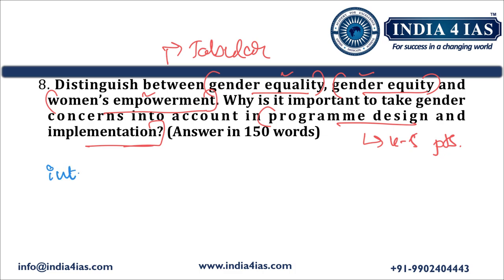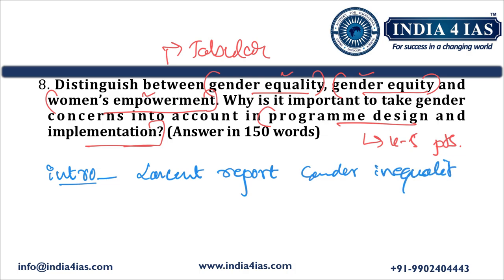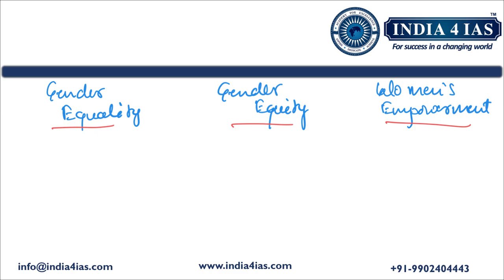Coming to the first part, we define and distinguish all three concepts. Gender equality is the state of equal rights, responsibilities, and opportunities for all genders in society. Gender equity is fair treatment according to individual needs, often addressing disadvantages. Women's empowerment is enabling women to gain control over their lives and make their own decisions. The key focus of gender equality is treating men and women equally, whereas gender equity recognizes differences and adjusts resources and support accordingly, taking into account whichever gender is marginalized.